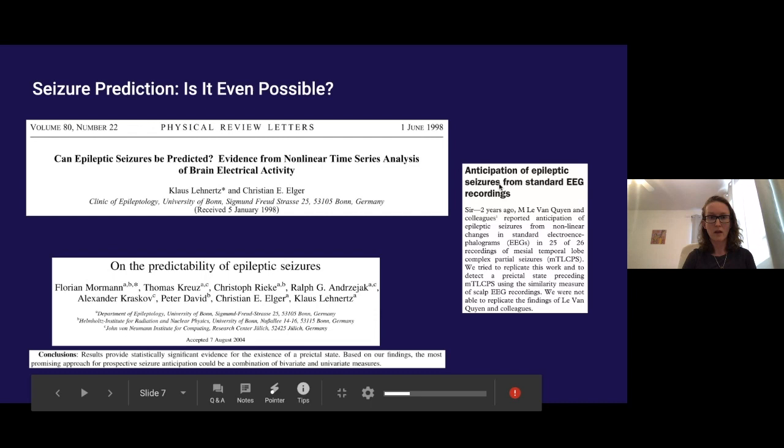Now up to 20 years ago it was actually unclear if seizure prediction was even possible because in order to predict an upcoming seizure there needs to be some signal somewhere in the brain that gives away that a seizure is coming before the seizure has happened.